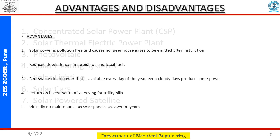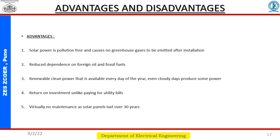In this slide we can see the advantages of solar energy. Solar power is pollution-free and causes no greenhouse gas emissions after installation. It reduces dependence on foreign oil and fossil fuels. It is a renewable, clean power source available every day of the year — even cloudy days produce some power. It offers returns on investment unlike utility bills, and requires virtually no maintenance as solar panels last over 30 years.